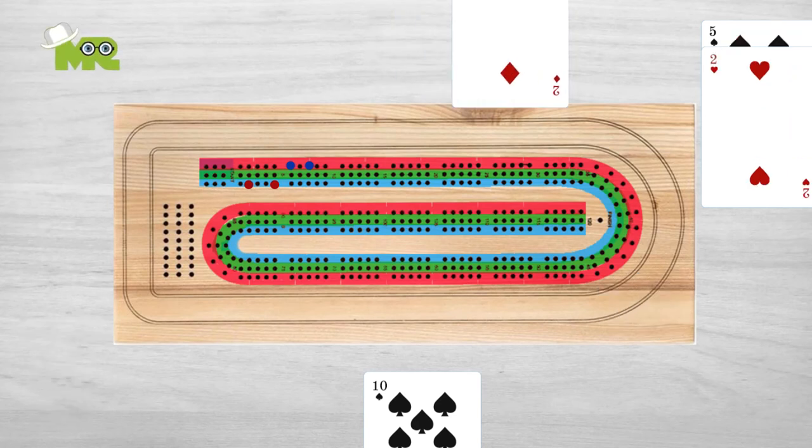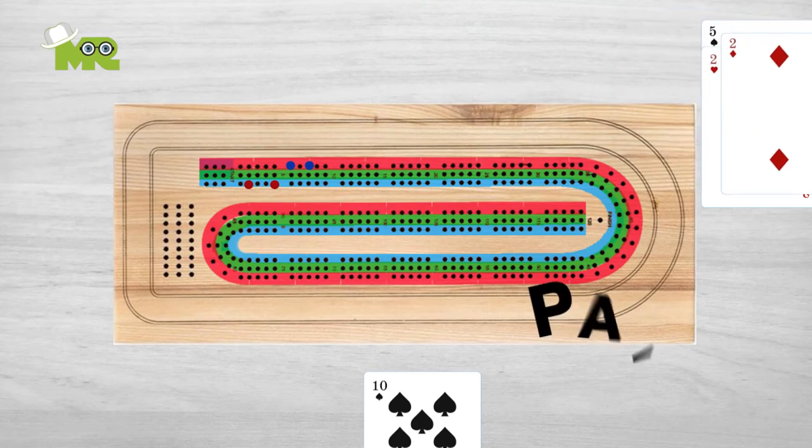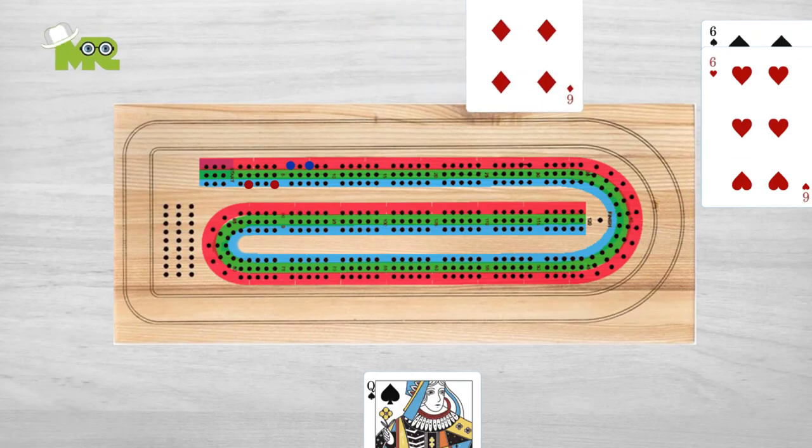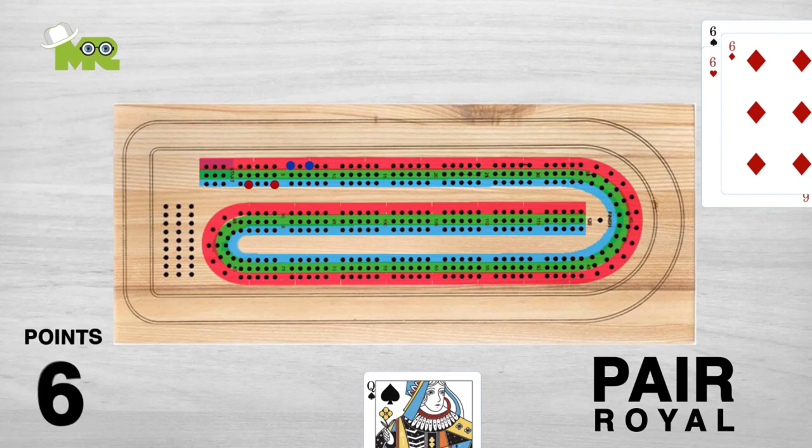If a player plays the same ranked card as the previous played card, they score two points for a pair. If a player plays three matching cards in a row, gets a pair royal, they score six points.